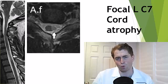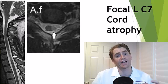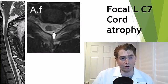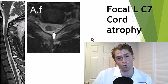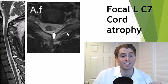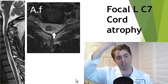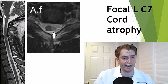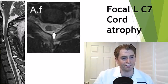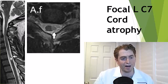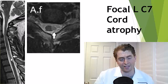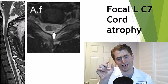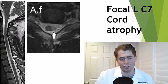Next, we'll look at spinal cord atrophy. Just like you can have atrophy or shrinkage of the brain, it can also occur in the spinal cord. This is an example of focal C7 left spinal cord atrophy. On the left, we're looking at sagittal images. Here you can see the brain stem, and vertebral levels C2 through C7. The spinal cord not only has a T2 bright lesion — it's also shrunken in caliber, indicating some tissue damage.